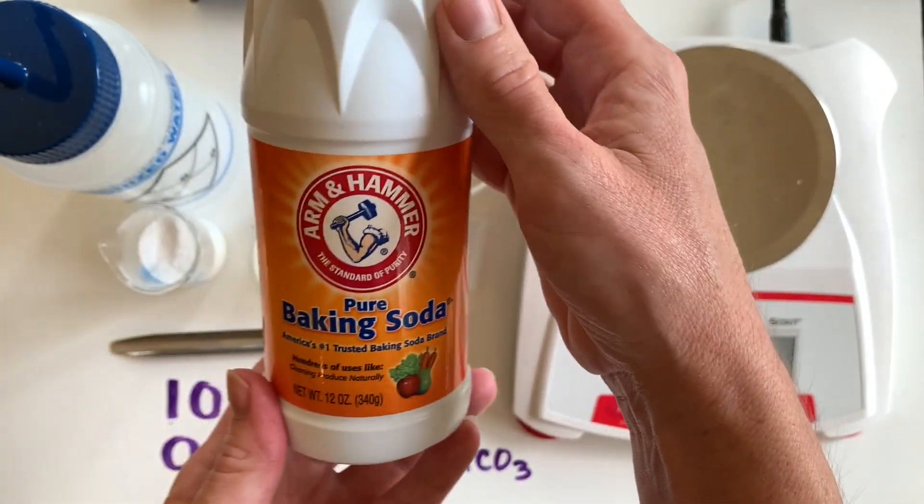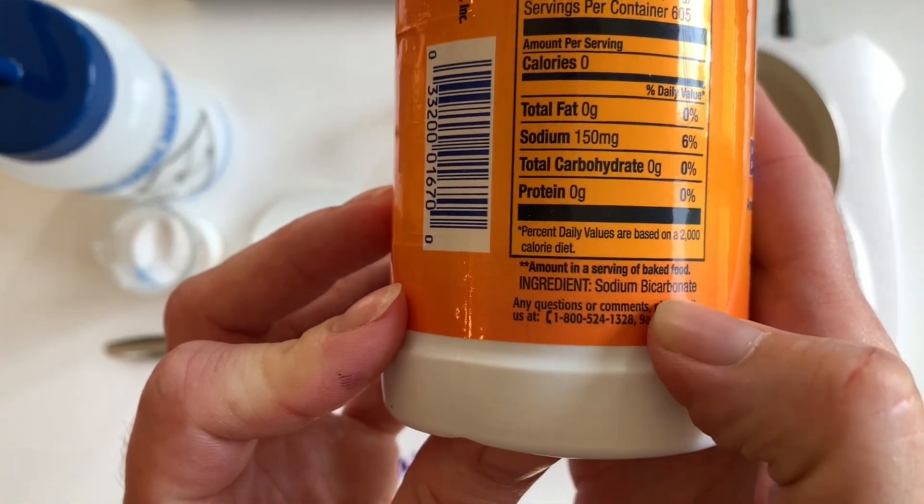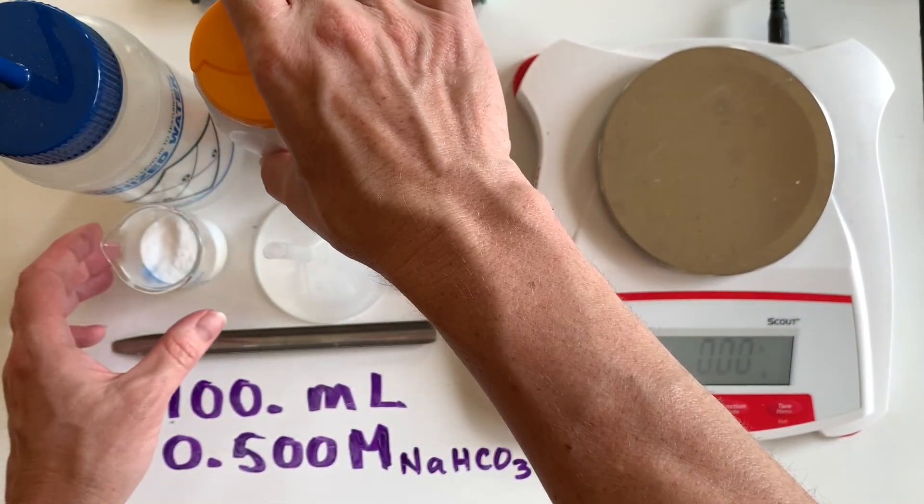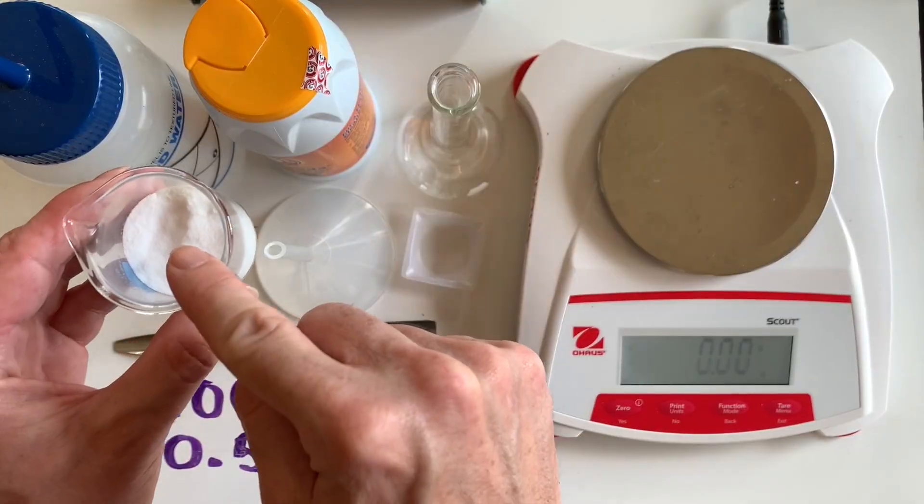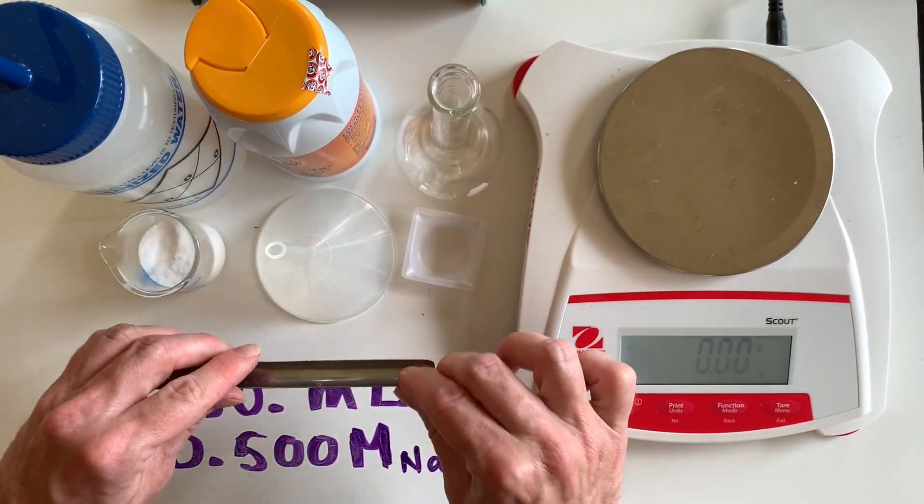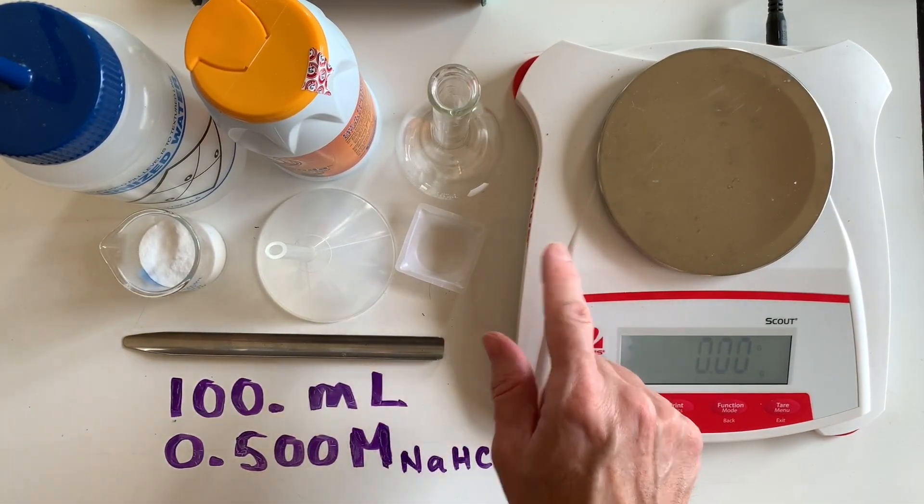Sodium bicarbonate is just baking soda. If you check the back label, you'll see it says sodium bicarbonate, also known as sodium hydrogen carbonate. I placed some of that sodium bicarbonate into a beaker so it was easier to measure. I will be using a spatula to transfer my sodium bicarbonate into a weighing boat on my balance to get the correct mass to make my solution.